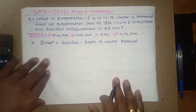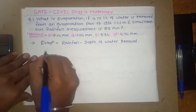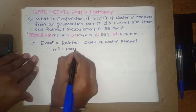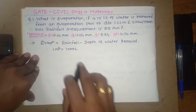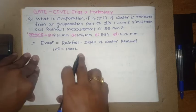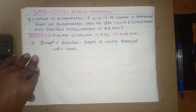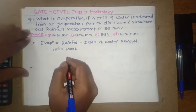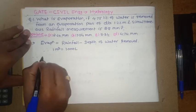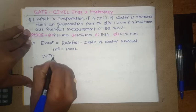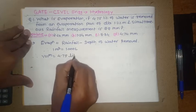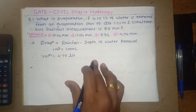We know that one meter cube is nothing but one thousand liters. So this basic relation between meter cube and liter we have to use here.